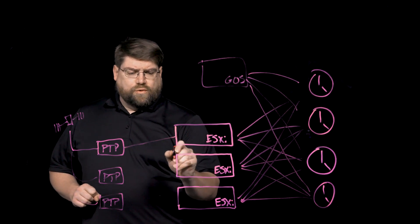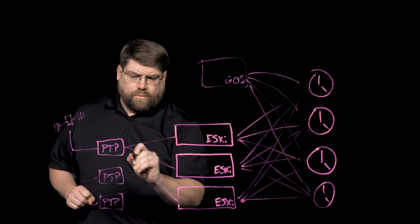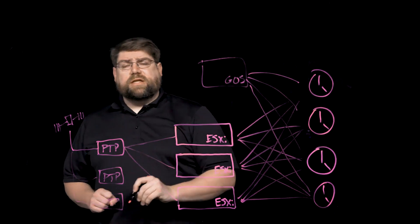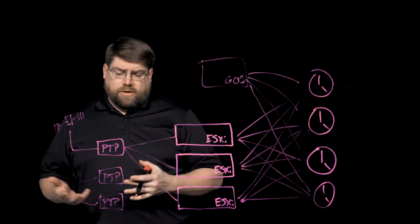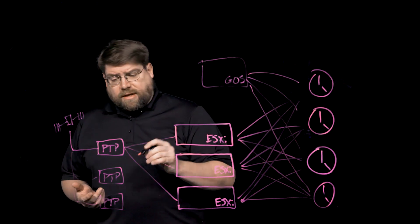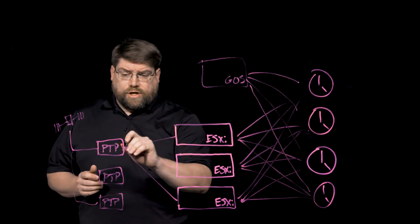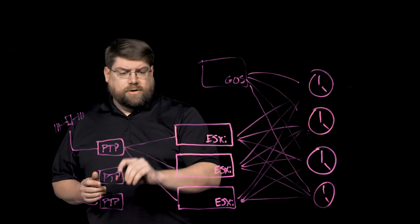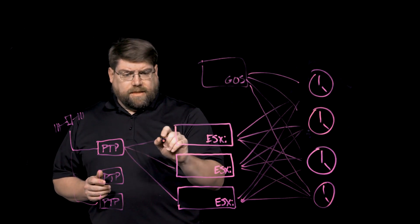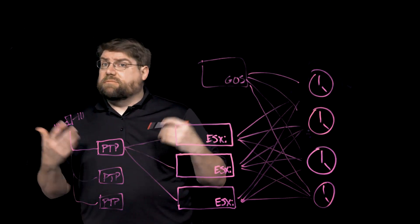And then you tell ESXi to synchronize with whichever one of these. These PTP devices will elect a master, will elect the grandmaster, I believe is what they call it. And so whichever one is that, the leader, they will respond when ESXi asks, hey, what time is it?